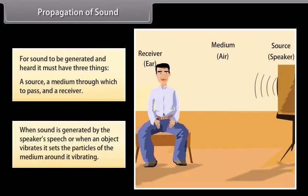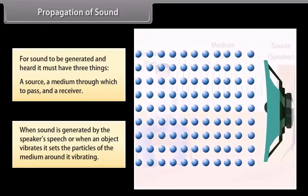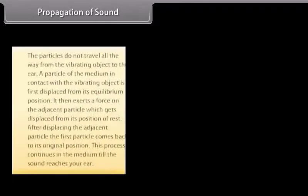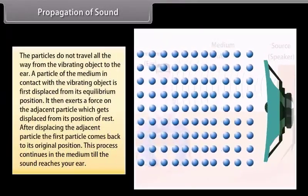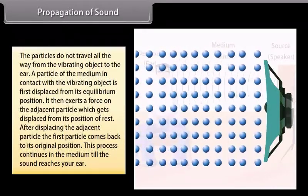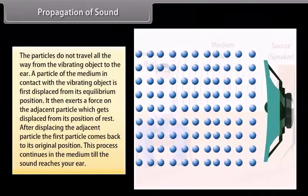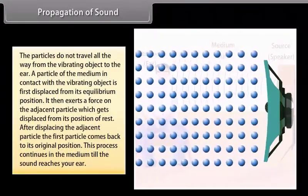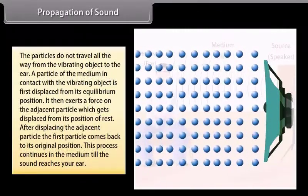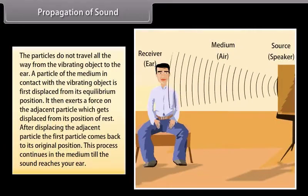When a sound is generated by the speaker's speech or when an object vibrates, it sets the particle of the medium around it vibrating. The particles do not travel all the way from the vibrating object to the ear. A particle of the medium in contact with the vibrating object is first displaced from its equilibrium position. It then exerts a force on the adjacent particle which gets displaced from its position of rest. After displacing the adjacent particle, the first particle comes back to its original position. This process continues in the medium till the sound reaches your ear.